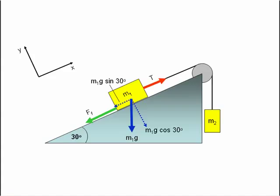If we resolve the force of gravity into two components, one acting down the slope, that's M1g sin 30, and one perpendicular to the slope, that's M1g cos 30.